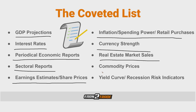Then we have commodity prices. There is a strong link between the state of the economy and commodity prices. The prices of base metals, for example, are closely linked to the outlook for overall economic health — they tend to go up when the economy is in good shape and tend to drop in times of recession.